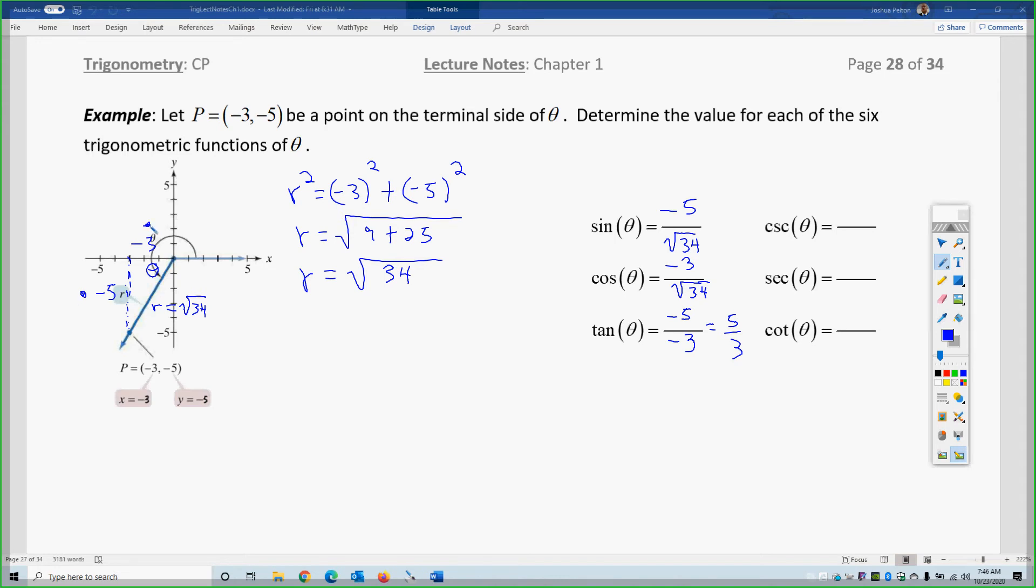You get the other trig functions, all you have to do is reciprocate. So, root 34 over 5, negative. Root 34 over 3, negative. And, 3 over 5, positive. Pause the video, try the student problem for yourself.